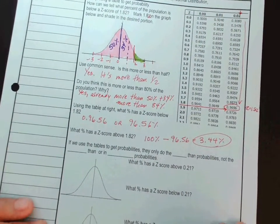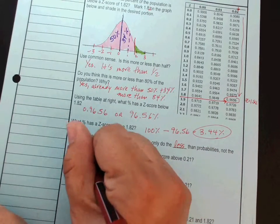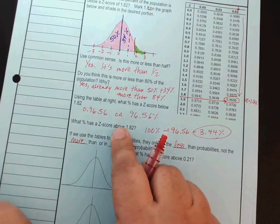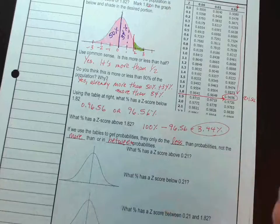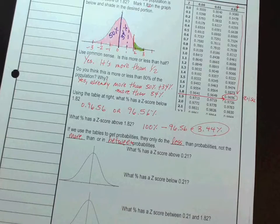Now, if we use the tables to get probabilities, they only do less than probabilities, not the more than, and not the in-between. So, how are we going to do it? We figured out how to do the more than from here. We said, oh, well, if we do the less than, we just subtract from 100%, and we got the more than.